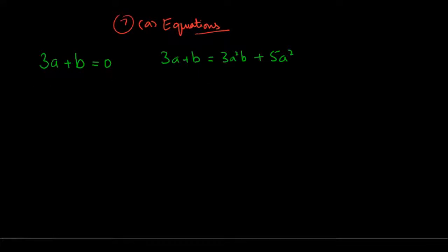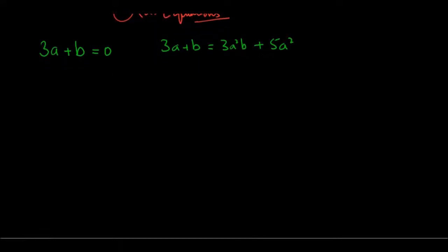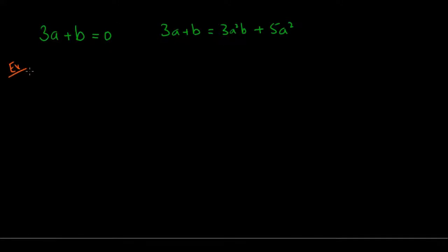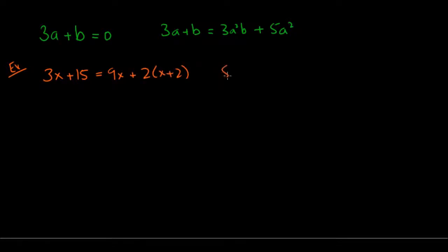Let's look at an example of how the GRE would test you on these. We have the equation 3x plus 15 equals 9x plus 2 times x plus 2, and the directions are to solve for x.